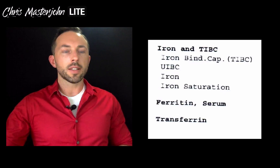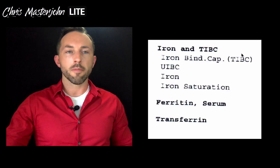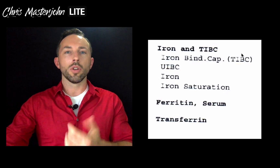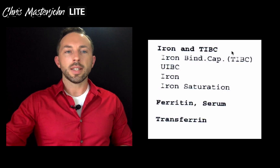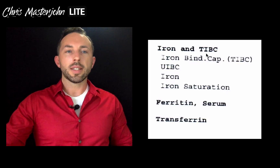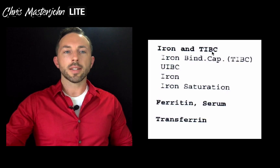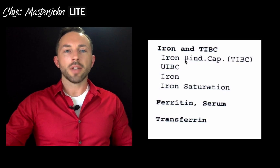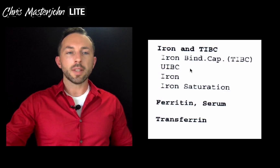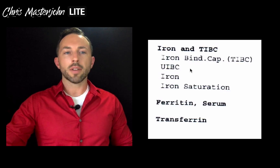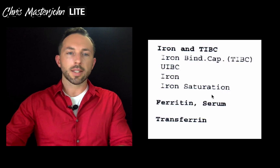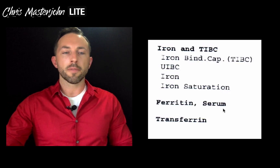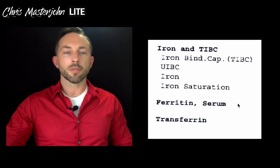If you look on the screen, you'll see the list of iron tests that I got for my most recent blood analysis — we'll look at the numbers in the next video. We have iron and TIBC. TIBC means total iron binding capacity, and that breaks down into TIBC, UIBC (which is unbound iron binding capacity), iron, and iron saturation. Then as separate tests I have added on serum ferritin and serum transferrin.